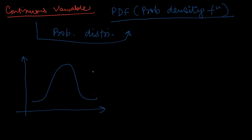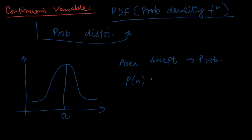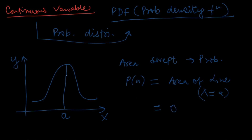For continuous variables, probability is calculated as the area swept under the curve. That is precisely the reason we cannot calculate the probability of an exact point — a single line x = a has area equal to zero. So the probability at any single point is zero.